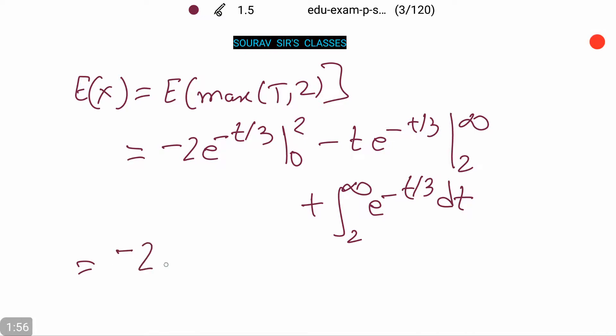And this is equal to minus 2e to the power minus 2/3 plus 2 plus 2e to the power minus 2/3.